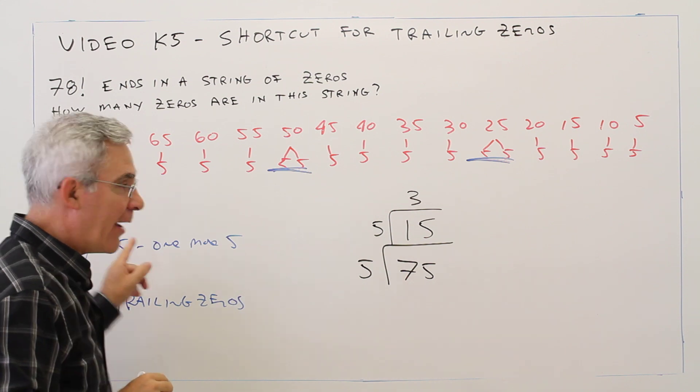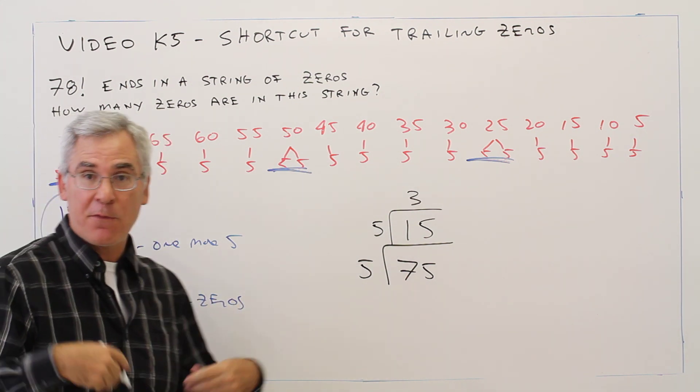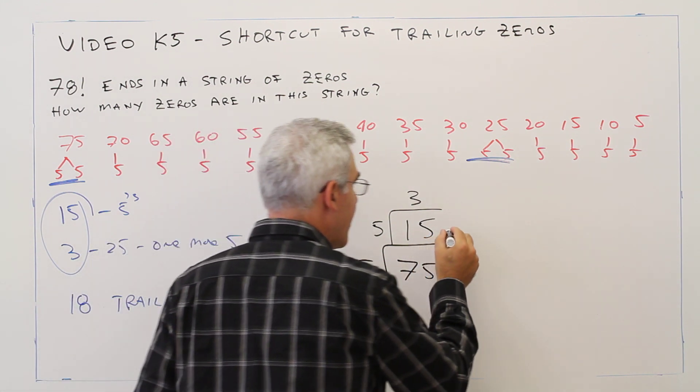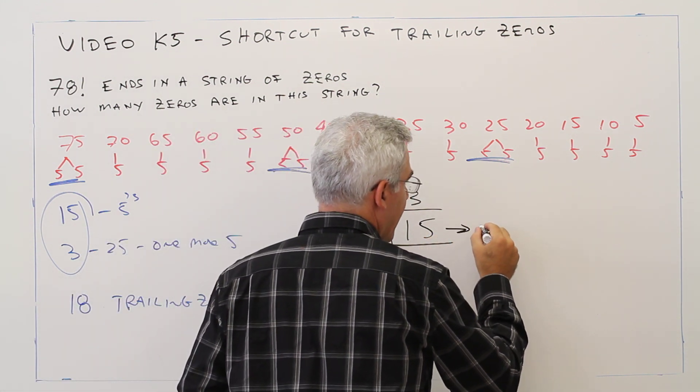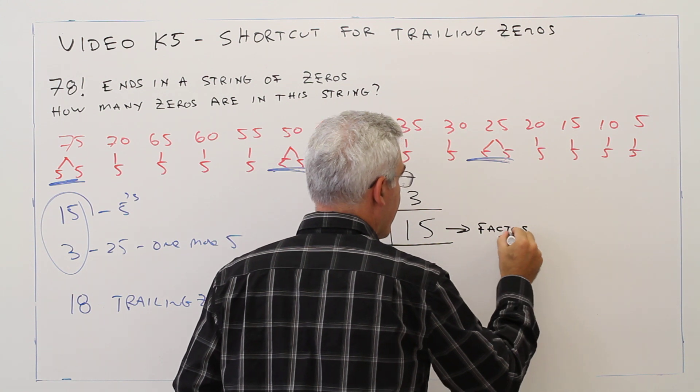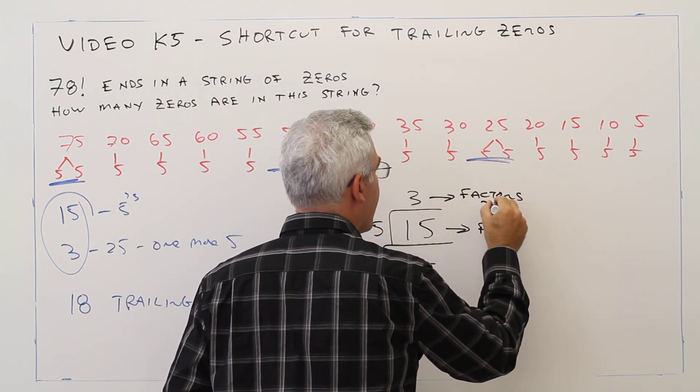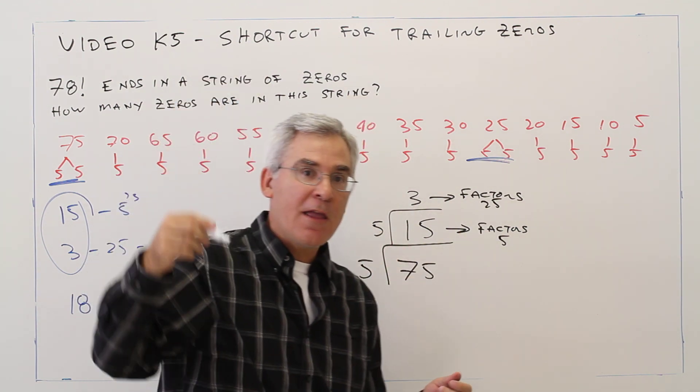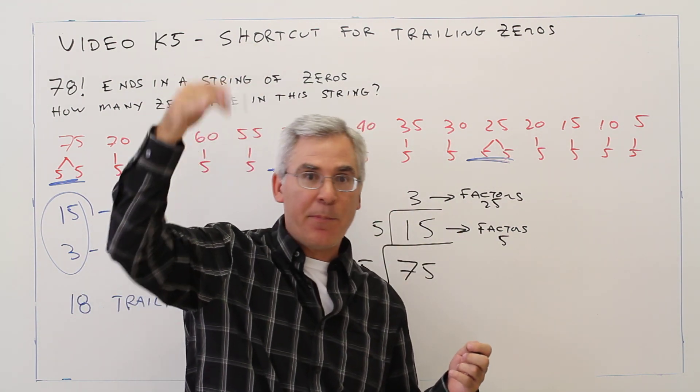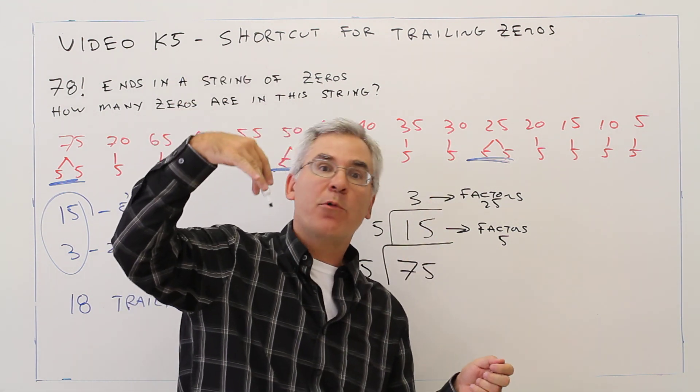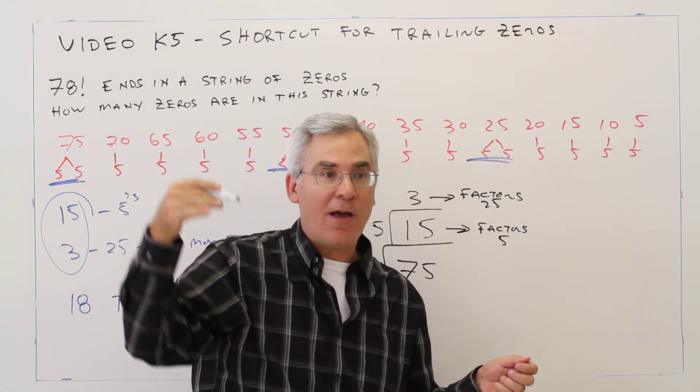Then I'm going to take that and divide that by 5 and I get 3. Oh, that corresponds to the factors of 25, which gives you the additional 5. So again, this is the factors of 5. This is the factors of 25. And if I had a bigger number, I could keep going up and up and up. This is 5 to the 1, 5 squared, 5 cubed, 125, 5 to the 4, 625, etc.